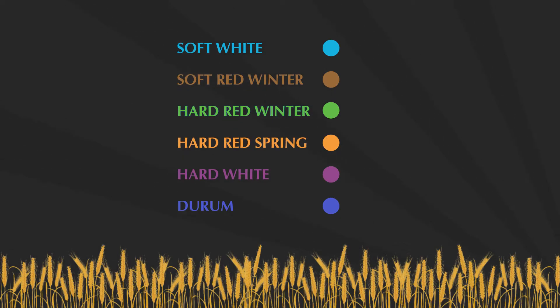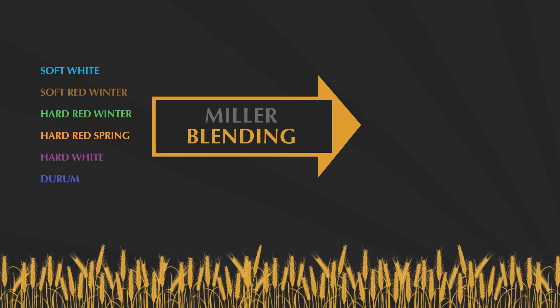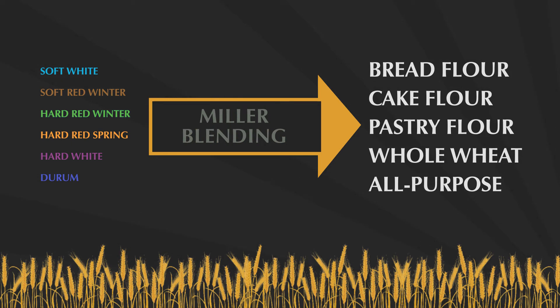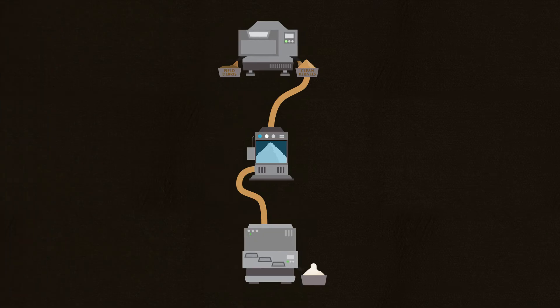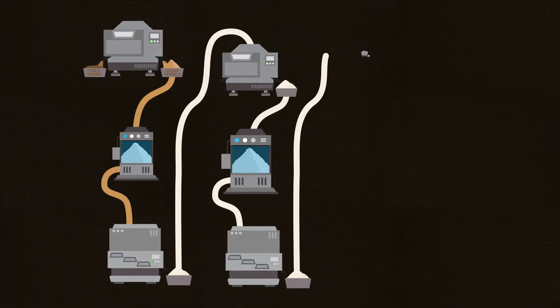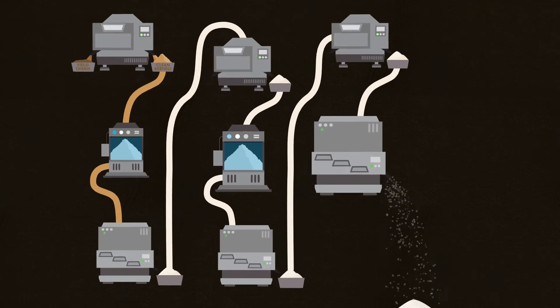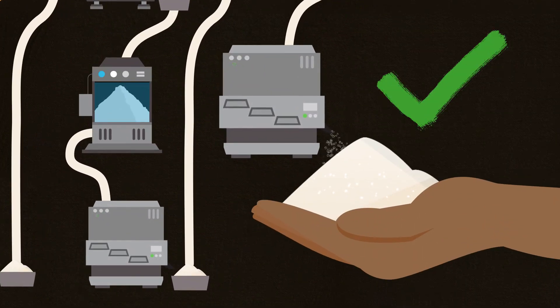Blending the different wheat classes helps millers create all of the different types of flours that today's markets demand. Sifting, purifying, mixing, and grinding is repeated until the milling team produces the correct flour blend for their specific customers.